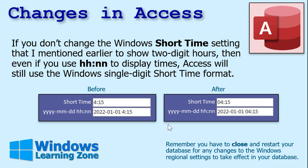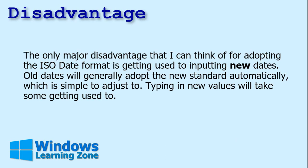The advantages of using the ISO date: if you do any kind of international communication — which I've already covered — it's unambiguous. Everyone is on the same page. Whether someone is in England, China, or the US, you all agree on the dates. The only major disadvantage I can think of for adopting the new format is getting used to inputting new dates. It's going to take some time to adjust — me included. I'm making this switch today, finally pulling the band-aid off. Old dates will generally adopt the new standard automatically.